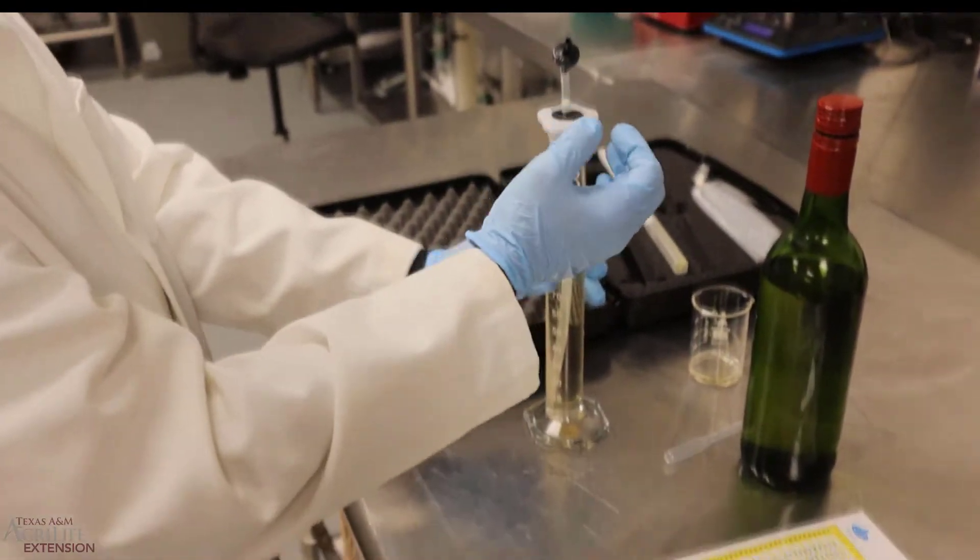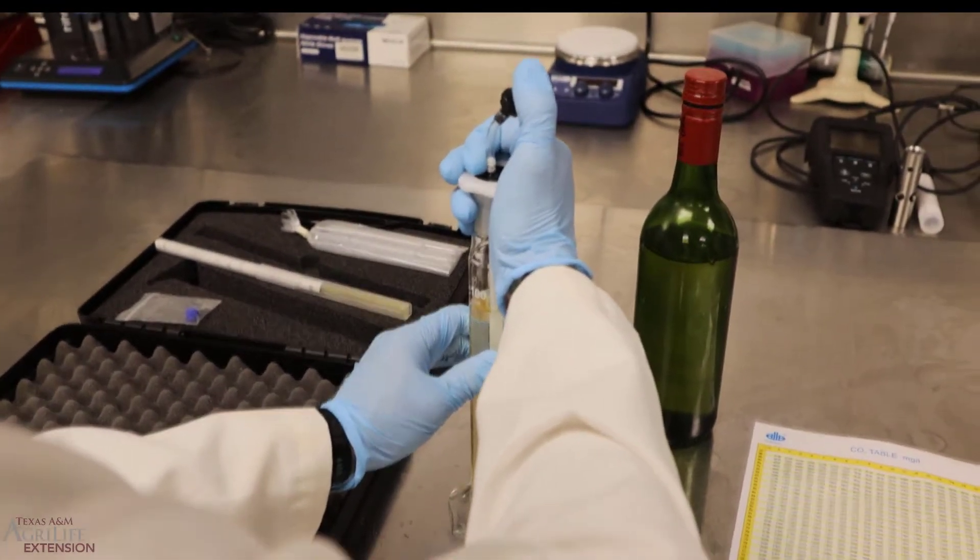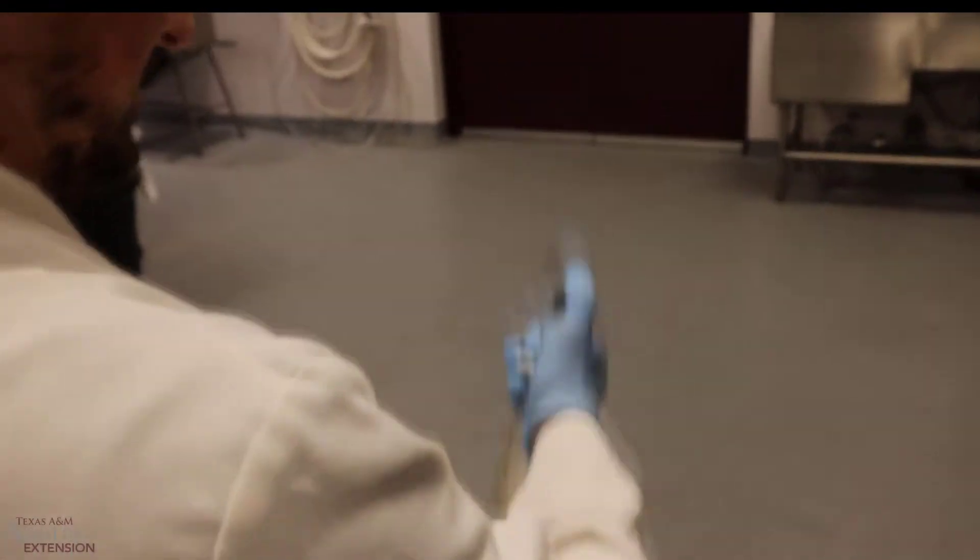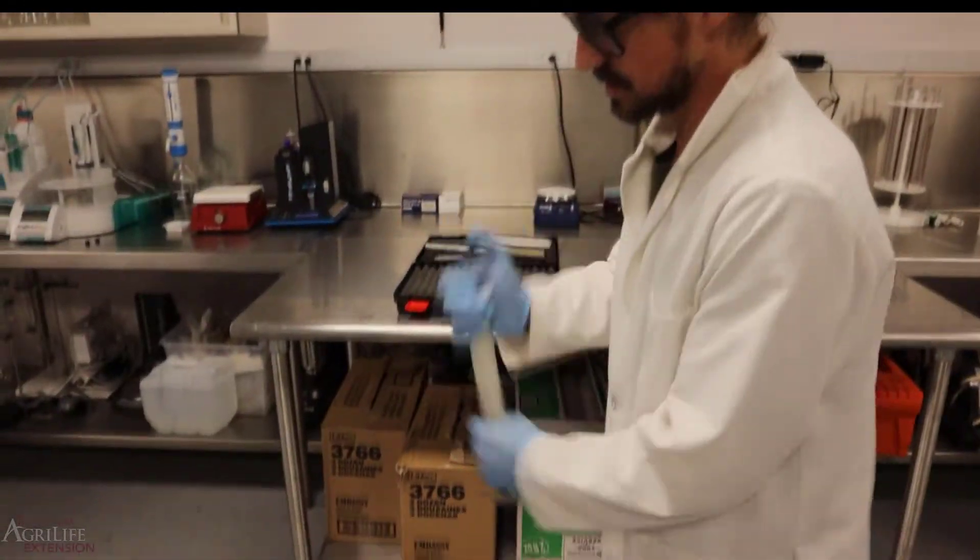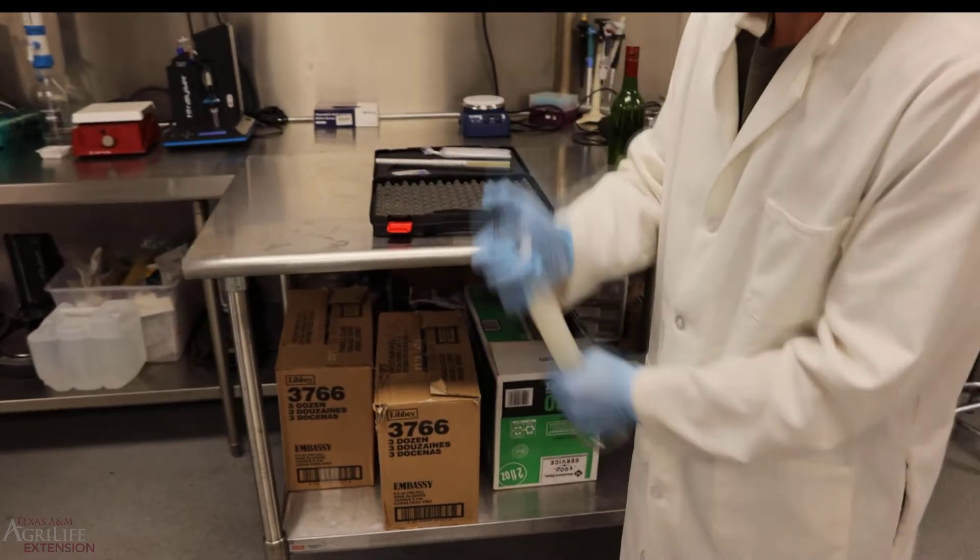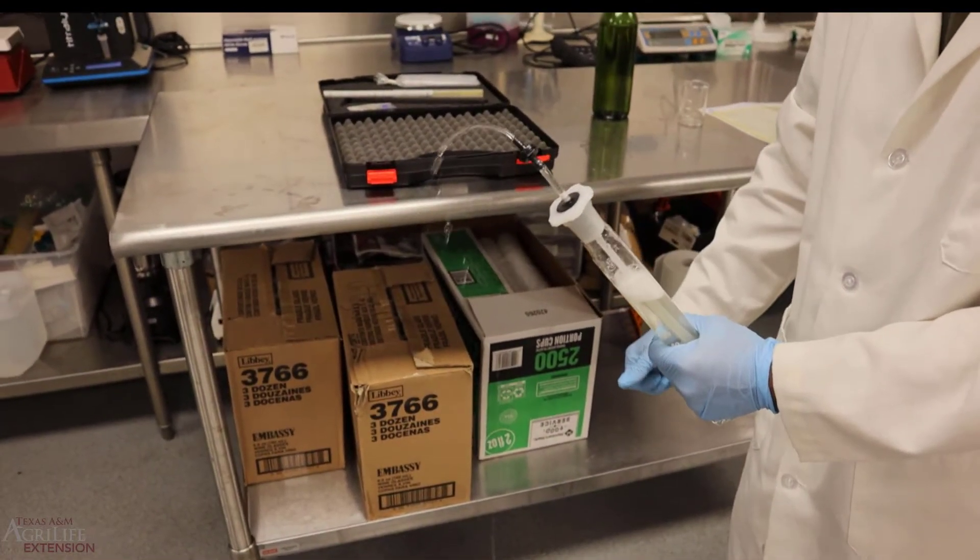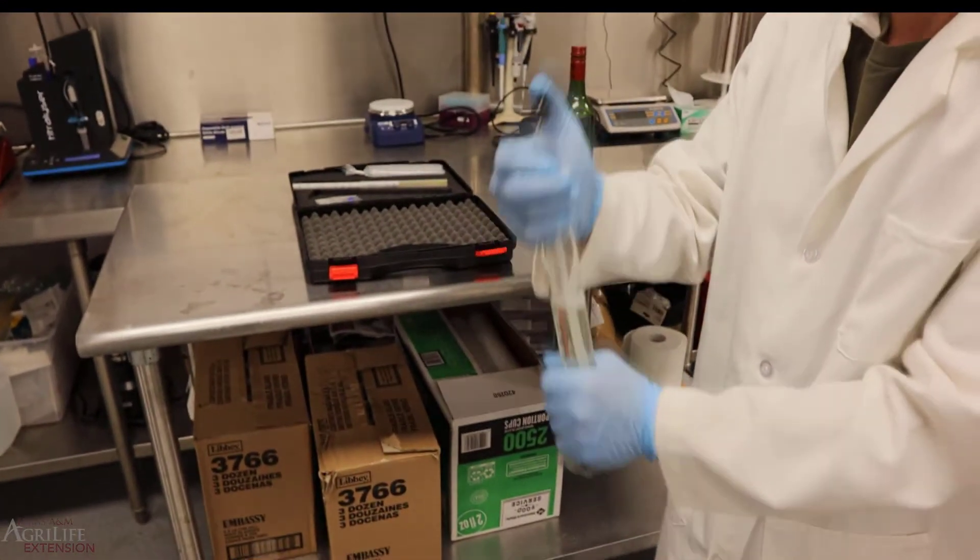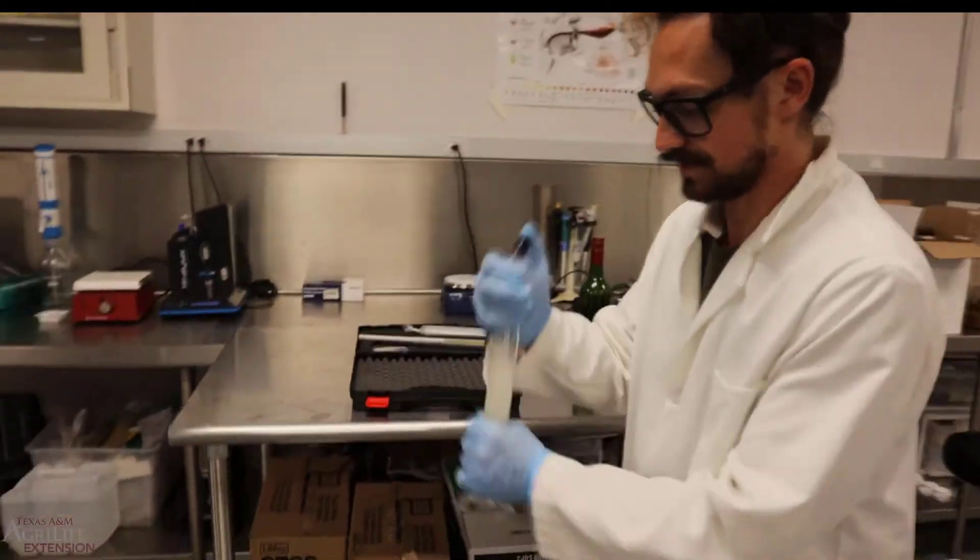We'll put our finger over this hole right here on the top. And then we will shake this real quick. Doing this we'll remove our finger from over the hole. And we'll see wine released. We will continue to do this until there's no more flow of wine out of the cylinder.